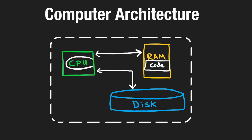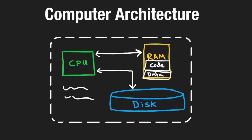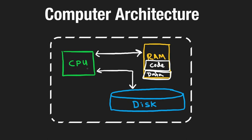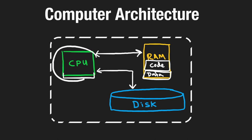The CPU reads code to execute it, but it also reads and writes from RAM for another reason — there's data stored in RAM that isn't the code itself. For example, if our pseudocode declares an array and loops through it, those instructions are the code, but the variable values are stored in the data portion of RAM. The CPU reads code and also manipulates data stored in RAM.